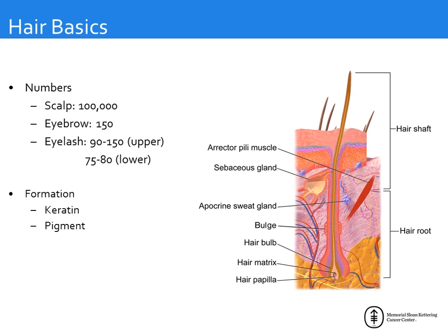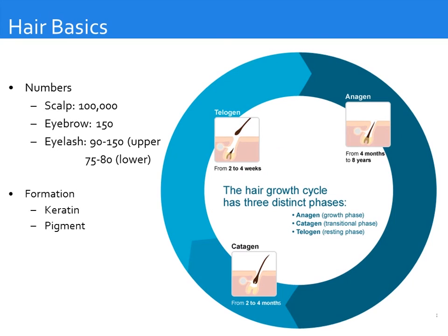There are about five million hair follicles throughout the body, about 100,000 hairs on the scalp, 150 hairs per eyebrow, about 100 on the upper eyelash, and about 75 on the lower eyelash. Some eyelash loss can be permanent with cytotoxic agents. There are three cycles of hair growth: anagen — in which hair grows for two to six years; catagen — a very short two to three week apoptosis phase; and telogen — the rest phase lasting about three weeks before allowing new hair to grow.